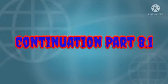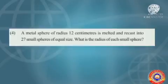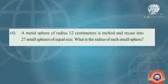Hi children, welcome back to the continuation part. Next, question number 4. A metal sphere of radius 12 cm is melted and recast into 27 small spheres of equal size. What is the radius of each small sphere?